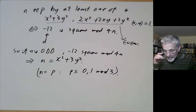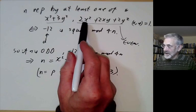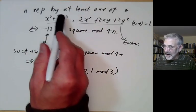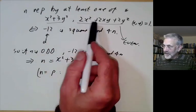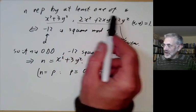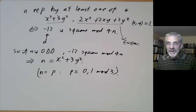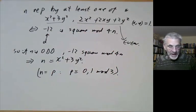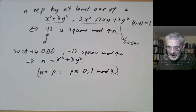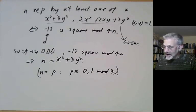These two forms are not equivalent: 2x² + 2xy + 2y² is always even regardless of x and y, while x² + 3y² is sometimes odd. So n is represented primitively by at least one of these forms if and only if −12 is a square mod 4n. If n is odd and this condition holds, then n must be of the form x² + 3y². The primes of this form are p ≡ 0 or 1 mod 3, consistent with our earlier result. Beyond d = −12, multiple equivalence classes appear and things become more complicated — we'll cover that in the next lecture.